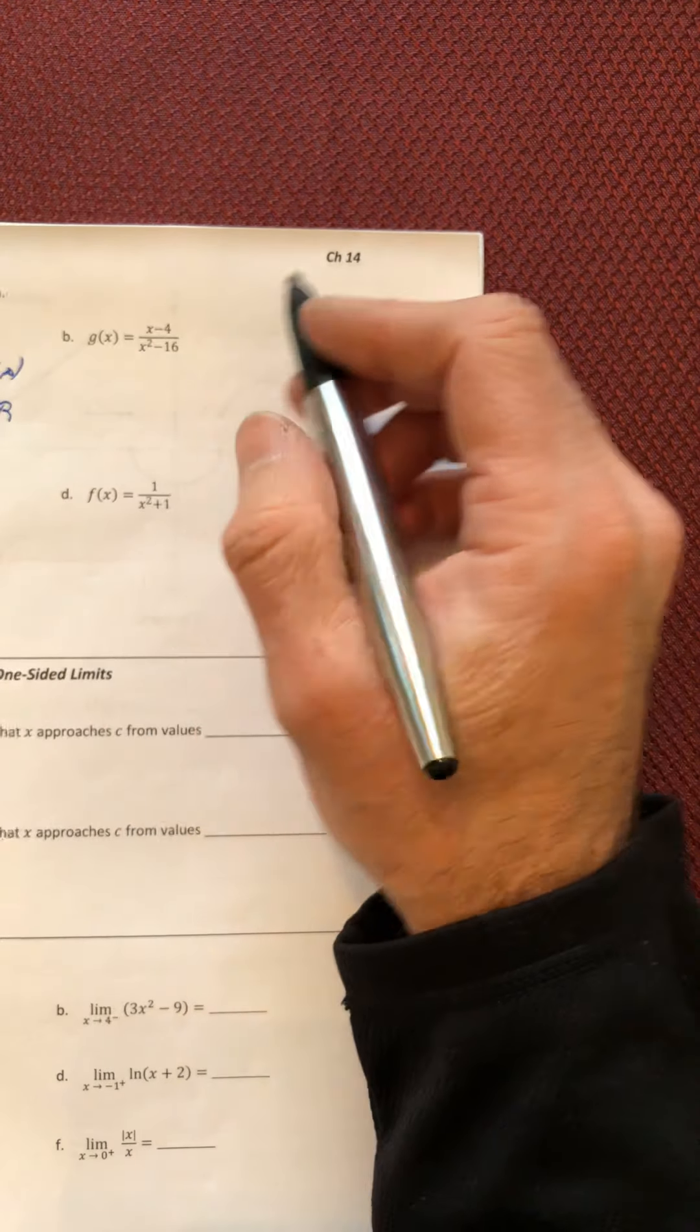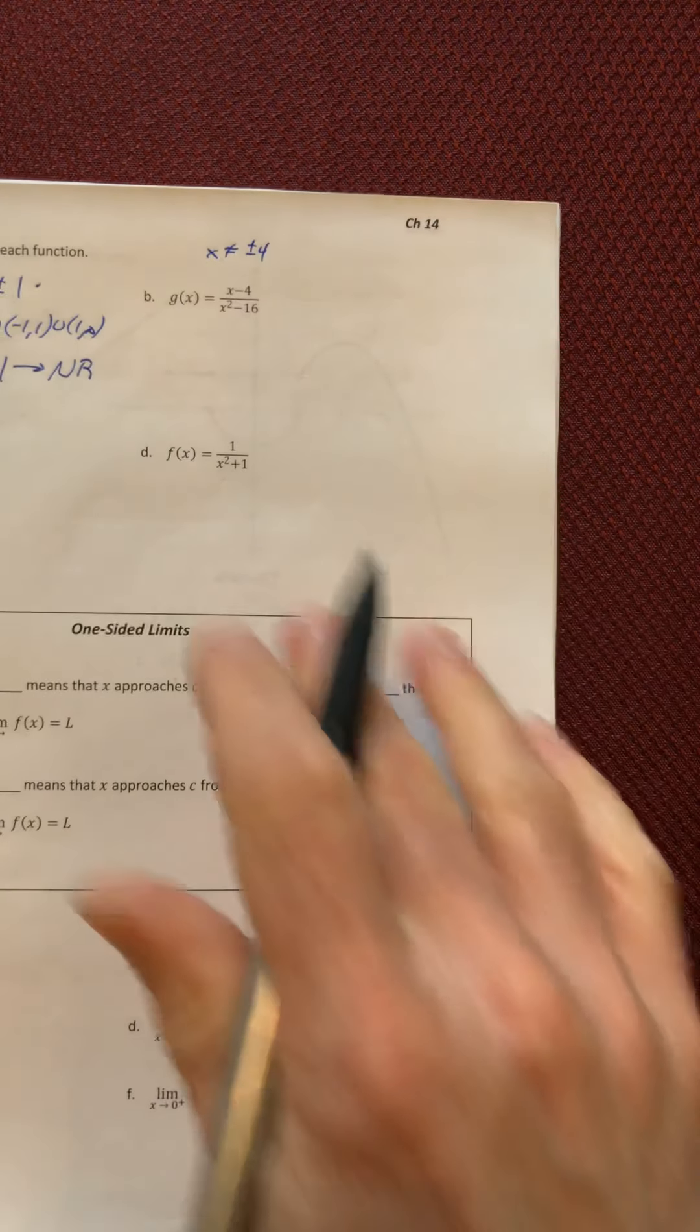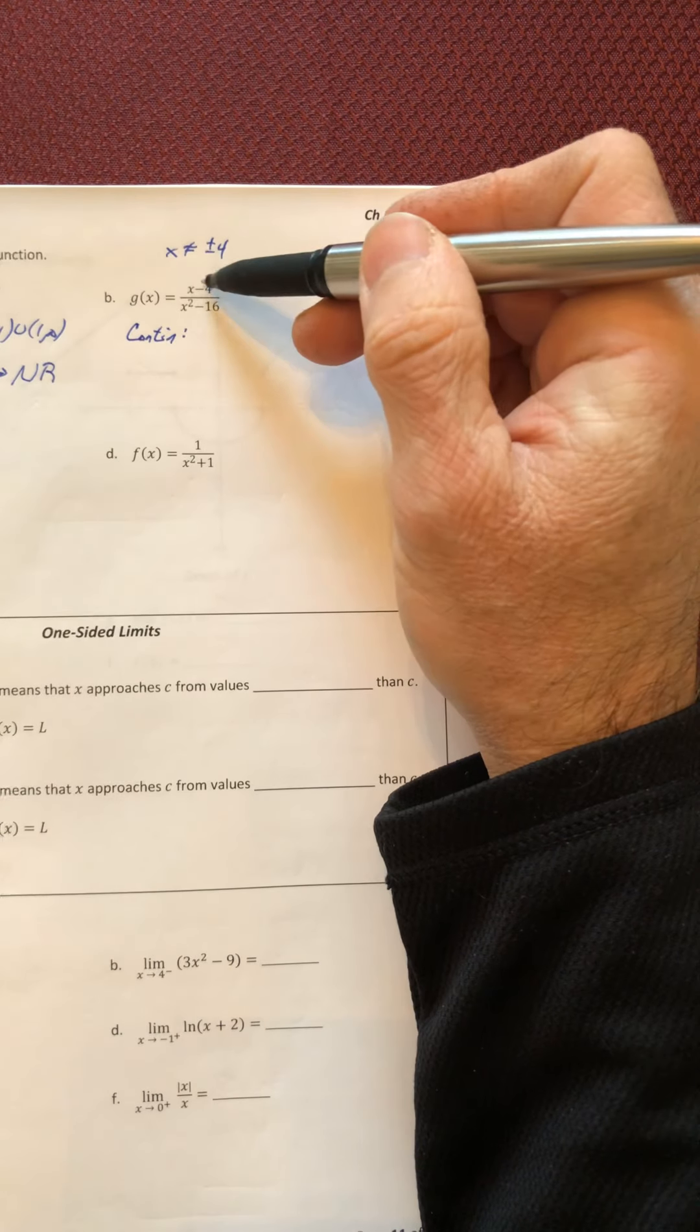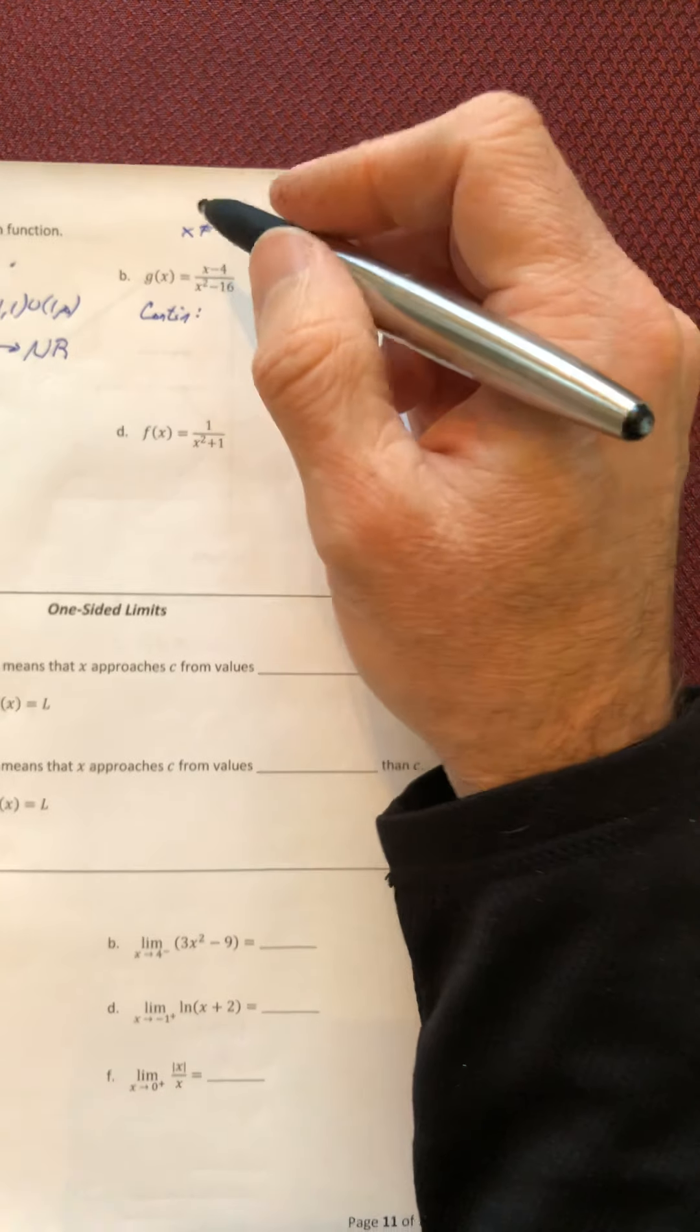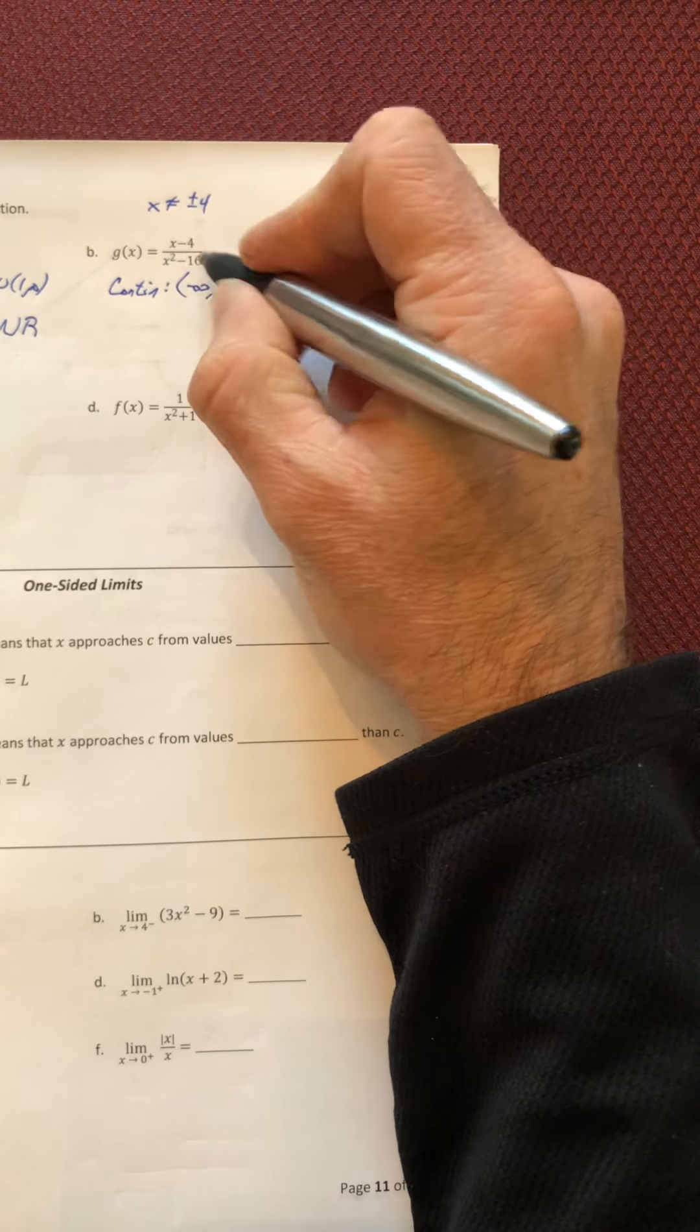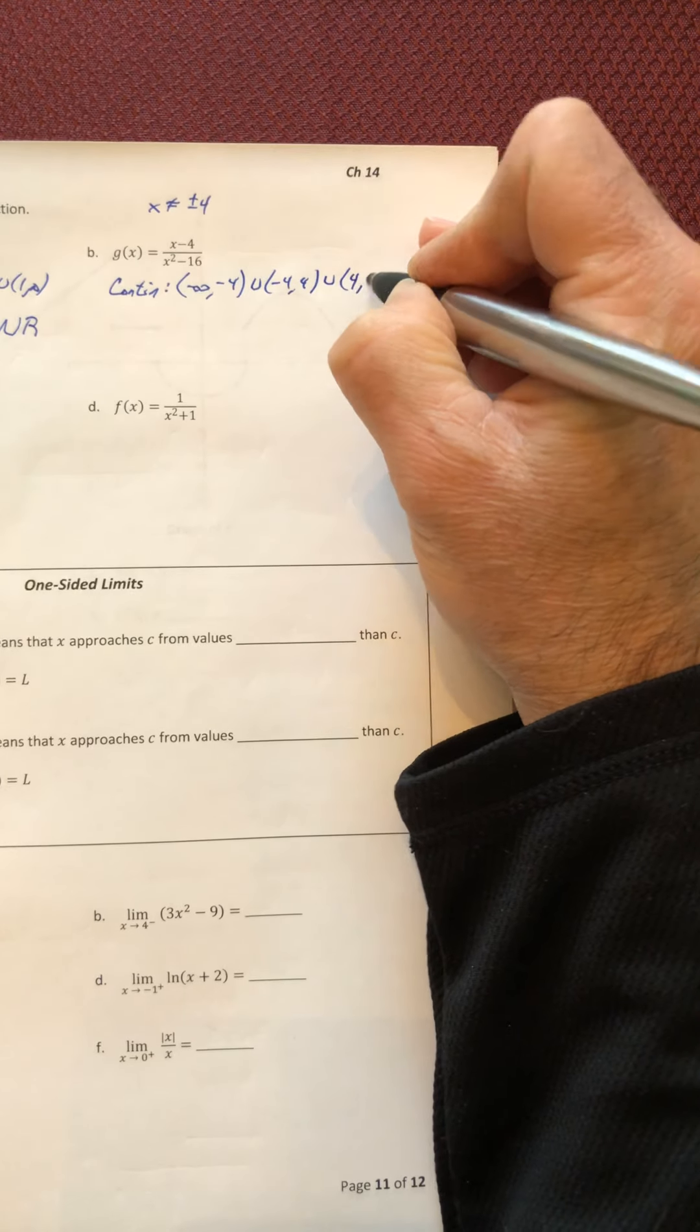Alright, so part G, we know x can't equal positive or negative four. So the continuity of the function is always going to be dependent on the original function. So even if it factors and stuff cancels out, your continuity and the domain always come from the original function. So it's continuous on negative infinity to negative four, negative four to four, and four to infinity.